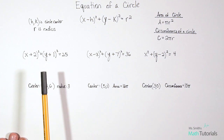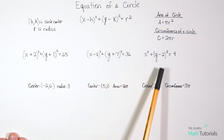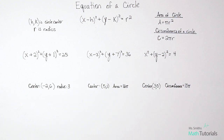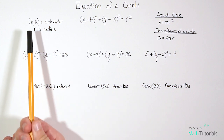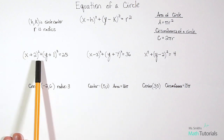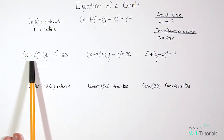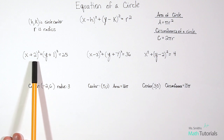For these first three examples, they've given us equations that are in standard form, and we want to identify the center and radius of each circle. Looking at this first example, remember that h is the x-value of the center — so in this case, h is two.